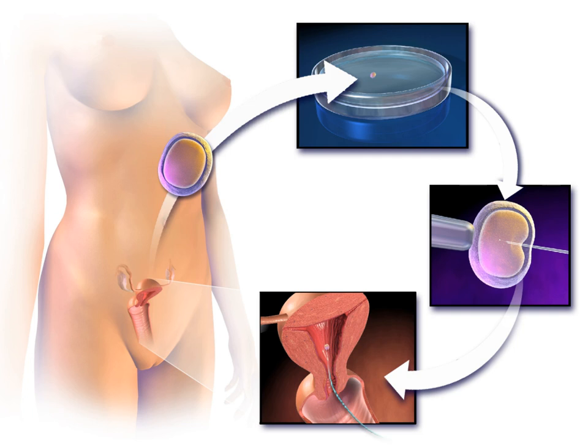In vitro fertilization is the technique of letting fertilization of the male and female gametes occur outside the female body. Techniques usually used in IVF include: transvaginal ovum retrieval, the process whereby a small needle is inserted through the back of the vagina and guided via ultrasound into the ovarian follicles to collect the fluid that contains the eggs. Embryo transfer is the step whereby one or several embryos are placed into the uterus of the female with the intent to establish a pregnancy.